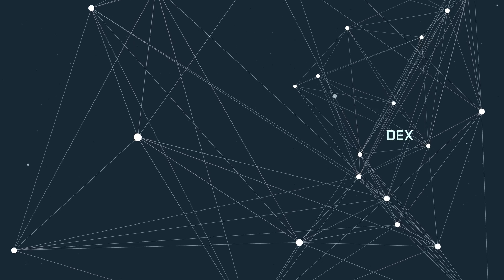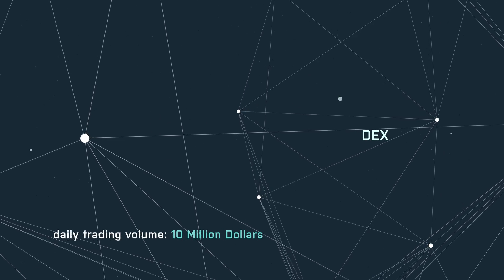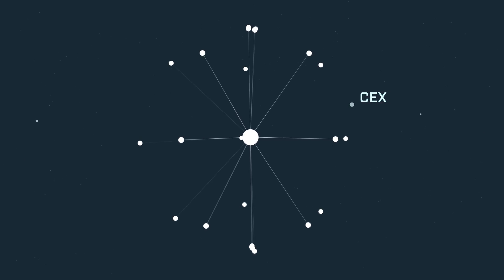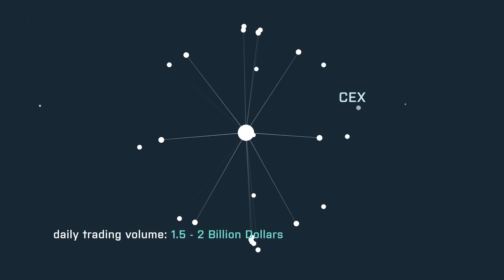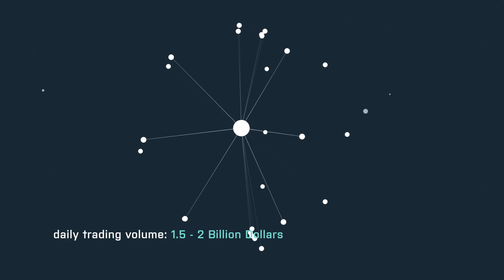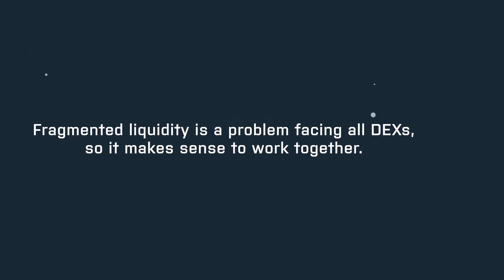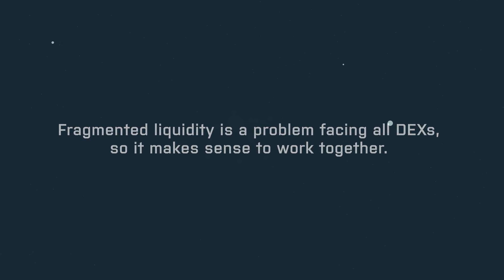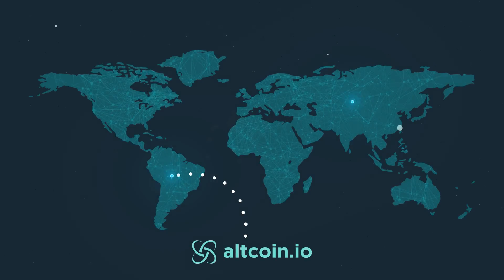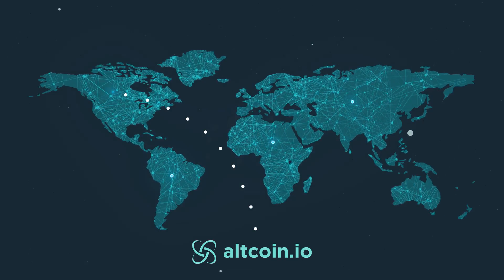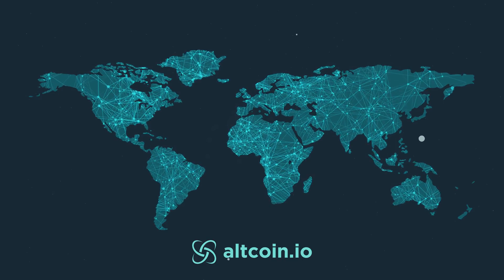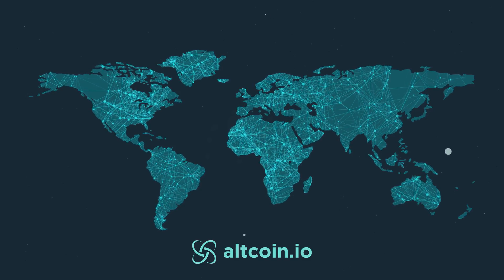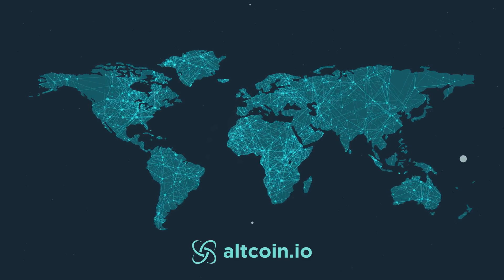The top decentralized exchange sees on average about 10 million dollars in daily trading volume, but the top centralized exchange sees over 1.5 to 2 billion dollars in daily trading volume. It's time to really work together, because fragmented liquidity is a problem we all face. We hope to power decentralized exchanges all across the globe so we can really raise the liquidity numbers and daily trading volumes in secure decentralized exchanges. Thank you.